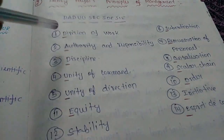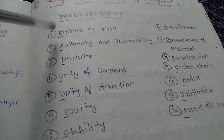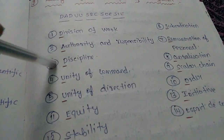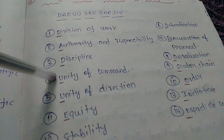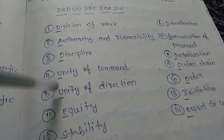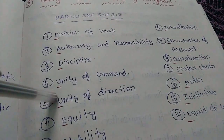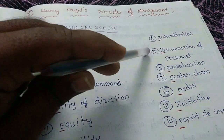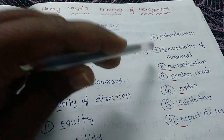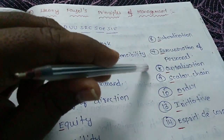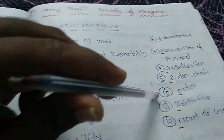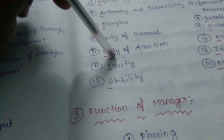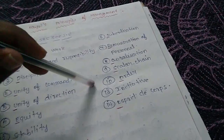1. Division of Work, 2. Authority and Responsibility, 3. Discipline, 4. Unity of Command, 5. Unity of Direction, 6. Subordination, 7. Remuneration.